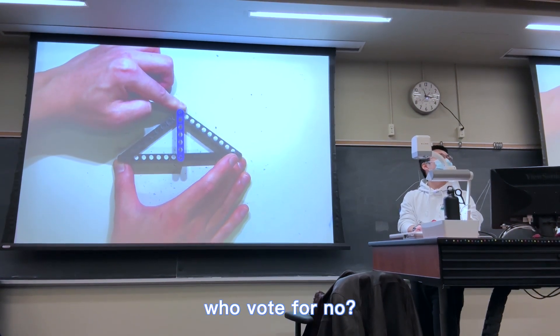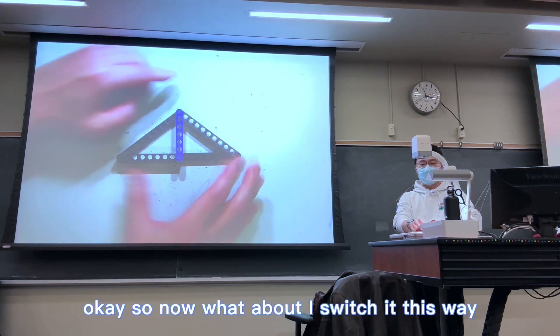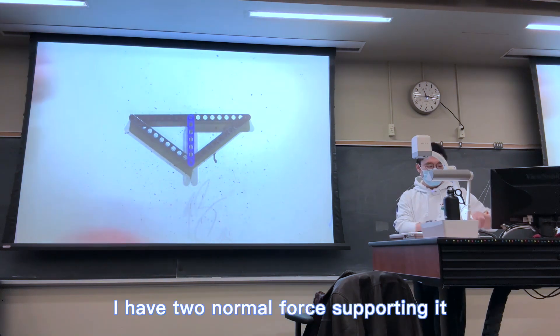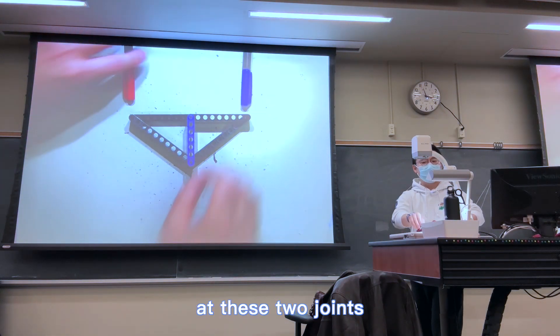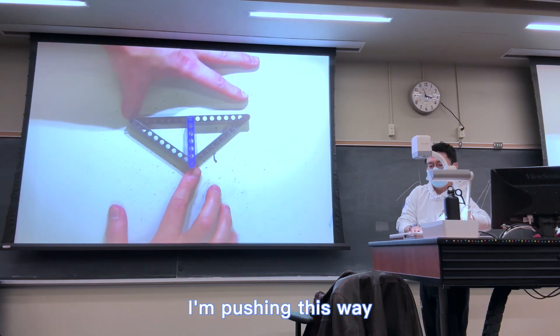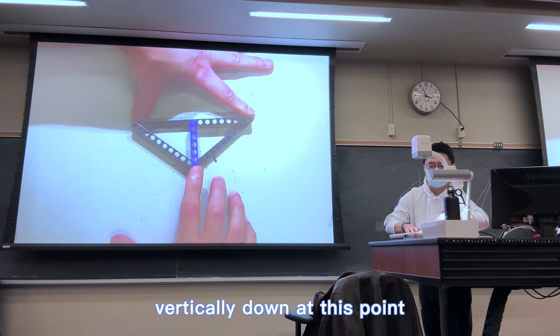Thinking about this joint and this joint. Who votes for no? Who votes for yes? Okay, so now what about I switch it this way? I have two normal forces supporting it at these two joints, and meanwhile, I'm pushing this way, vertically down at this point.